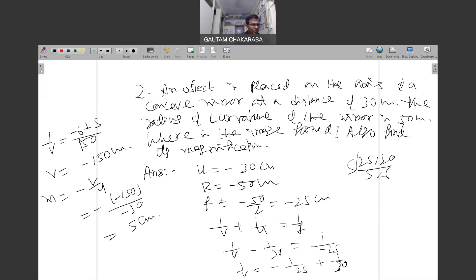Okay. For magnification, minus V by U, U is minus 30, V is minus 150, so magnification is 5. This is negative, so the magnification is positive. That means a virtual and erect image formation. Magnification is greater than one, so it's a magnified image.